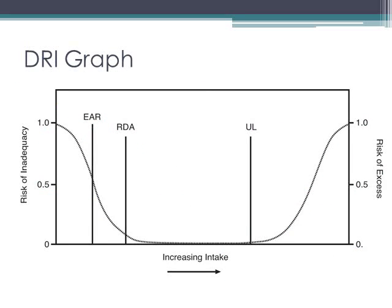Let's look at this graph that does a nice job of representing all of the different DRI values. As we move from one side to the other, our risk of inadequacy increases when we have very low intake, whereas moving toward higher intakes increases our risk of excess or toxicity. The EAR meets about 50% of our population's needs. The RDA meets nearly all, or 97 to 98%. There's quite a range between the RDA and the UL where consumption is fine, but once we exceed our UL, we increase our risk of toxicity. As our intake increases, the risk of deficiency decreases.